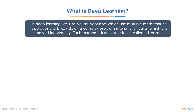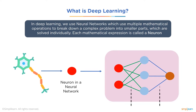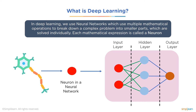In deep learning, we use neural networks to apply multiple mathematical operations to break down a complex problem into smaller parts solved individually. Each mathematical expression is called a neuron. Deep learning models are trained using large sets of labeled data and neural network architectures that learn features directly from the data without manual feature extraction. A convolutional neural network (CNN) convolves learned features with input data using 2D convolutional layers, making it well-suited for processing 2D data such as images.